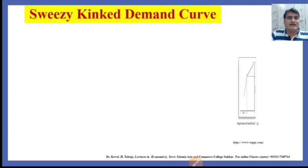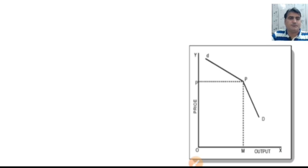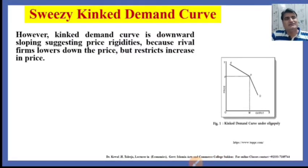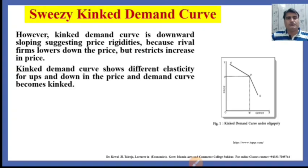The Sweezy Kinked demand curve is shown here. This is the demand curve — a downward falling curve — and after point P, the demand curve has a kink. It means that an increase in price is not followed by the competitor, whereas a decrease in price is followed by the competitor. The kinked demand curve is downward sloping, suggesting price rigidity because rival firms lower their price but restrict price increases. The kinked demand curve shows different elasticity for upward and downward changes in price, and the demand curve becomes kinked.